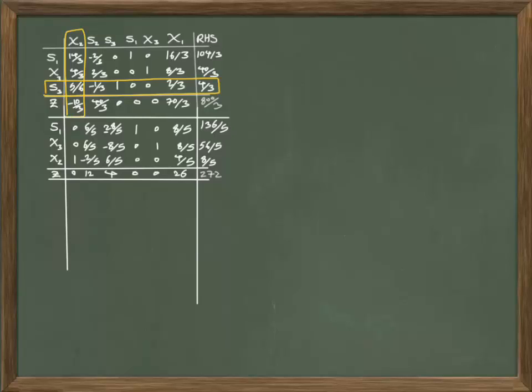If I implement this elementary row operation, you see that now we are in the optimal table because there is no negative term in the row of Z and therefore we have reached the optimal solution.